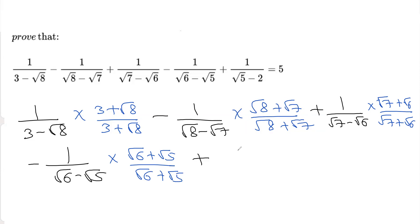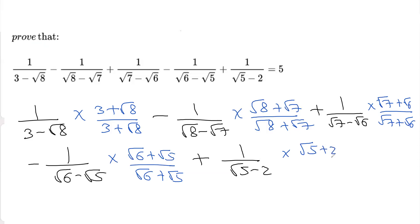For the last part, this is 1 over root 5 minus 2. We multiply and divide by root 5 plus 2.